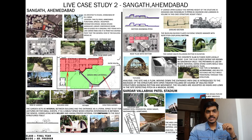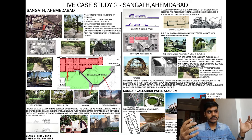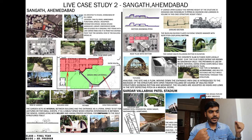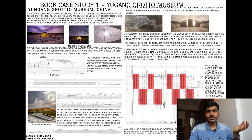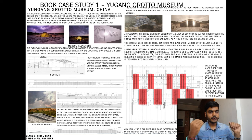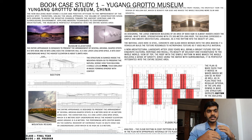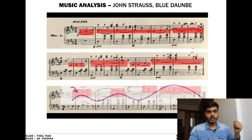Next is Sangath, designed by the late B.V. Doshi. The welcoming green space as you enter can be identified as interval, and the building sections can be identified as the high and low notes of pitch. Then I did a case study of the Ugong Grotto Museum. The main thing is the wavy roof, which was very interesting to me. The plan is made such that it moves in waves visible in both the roof and plan, moving up and down in regular intervals, depicting rhythm in the building.